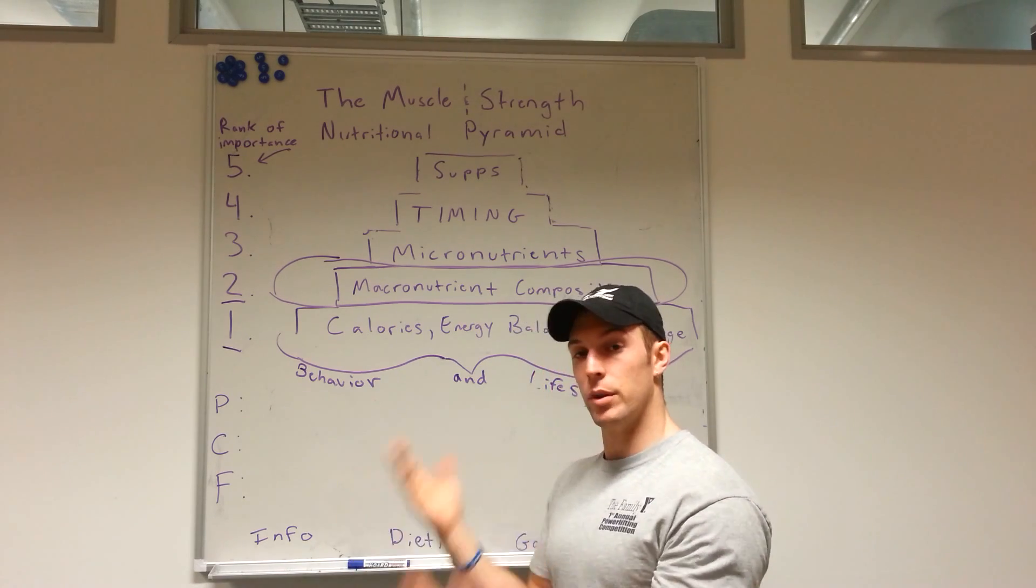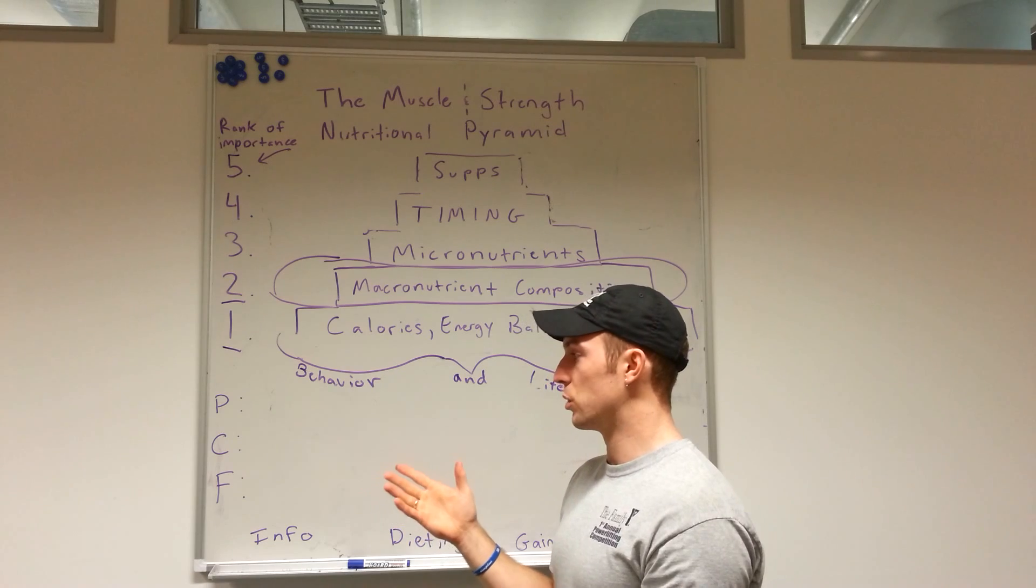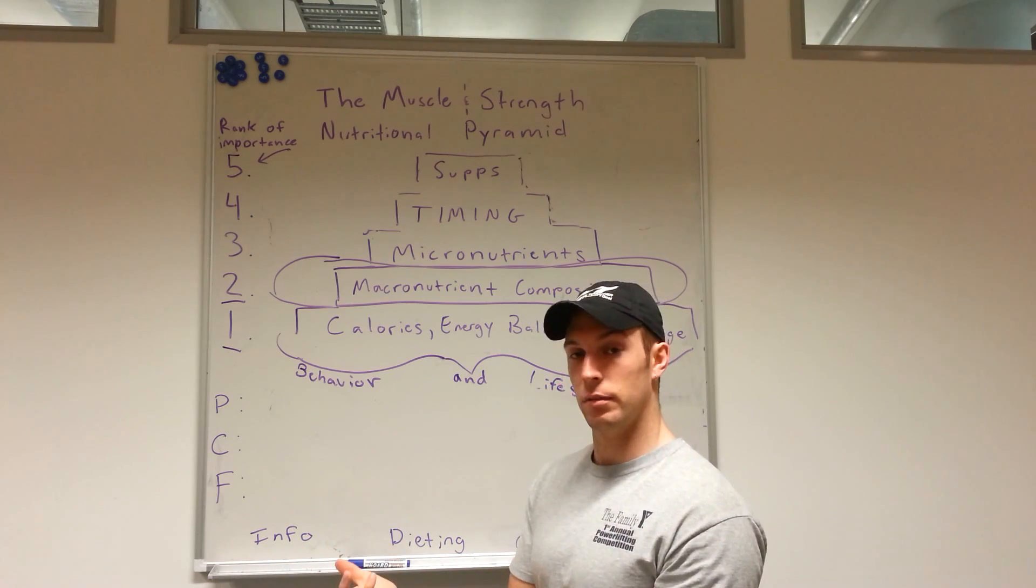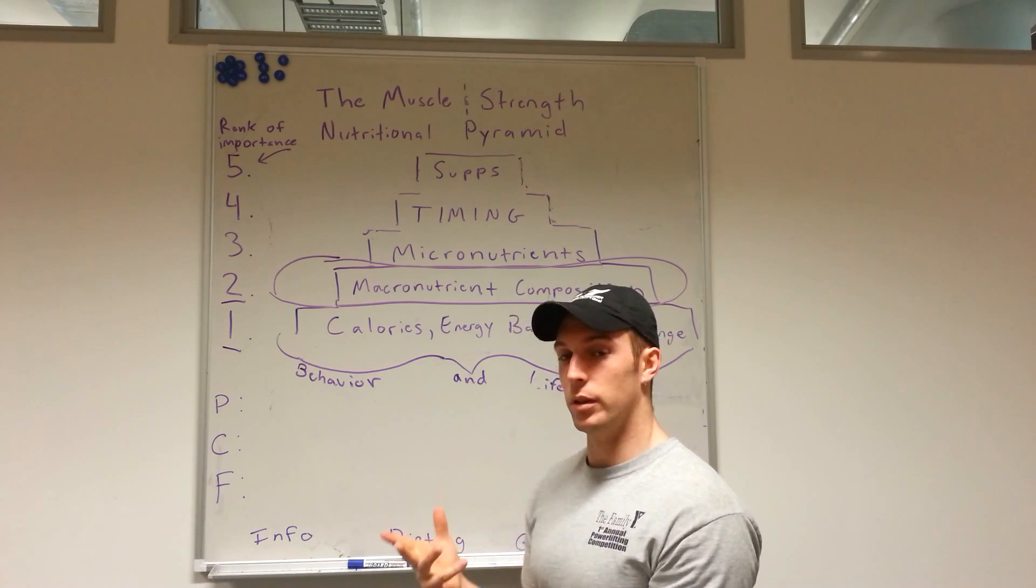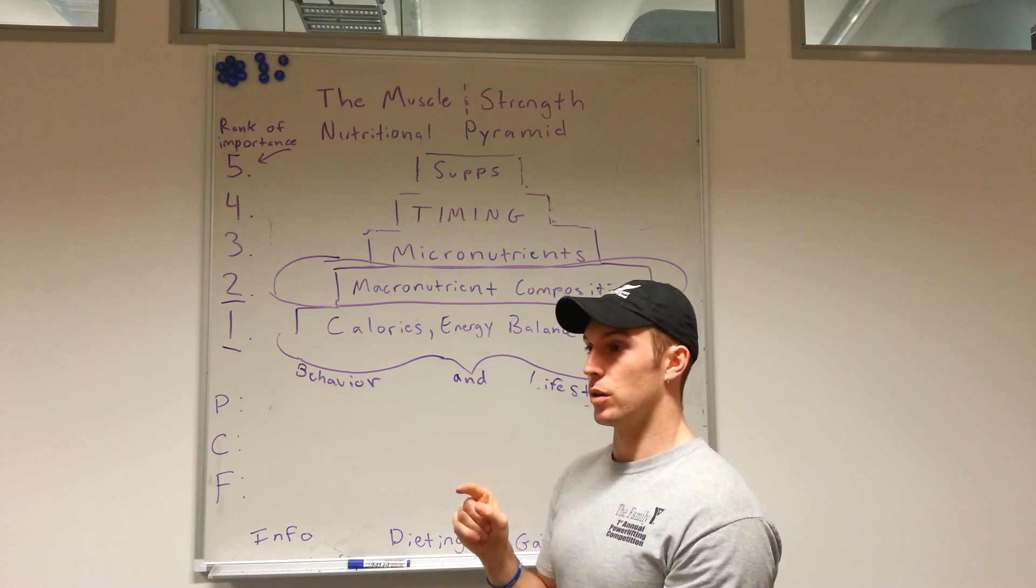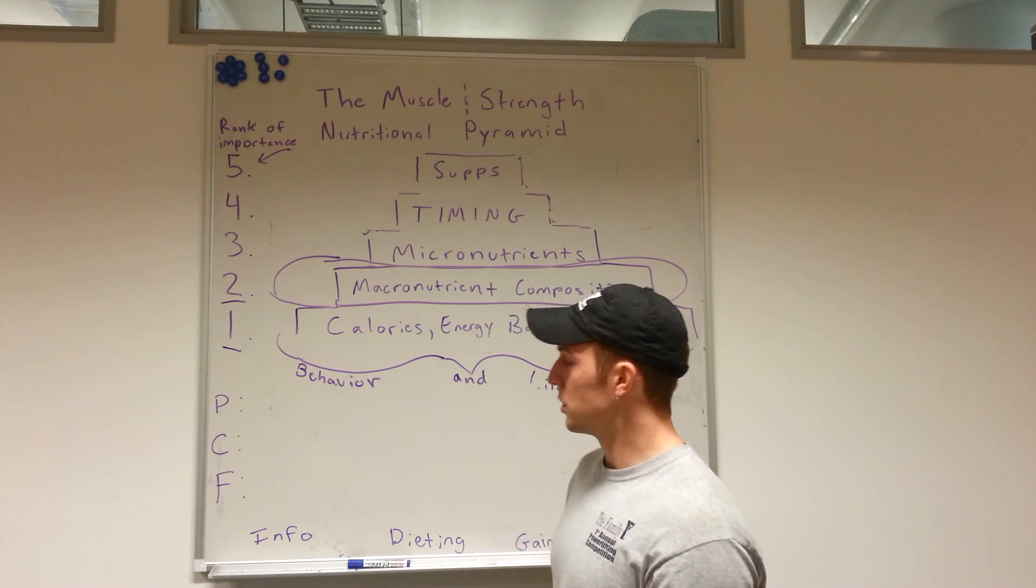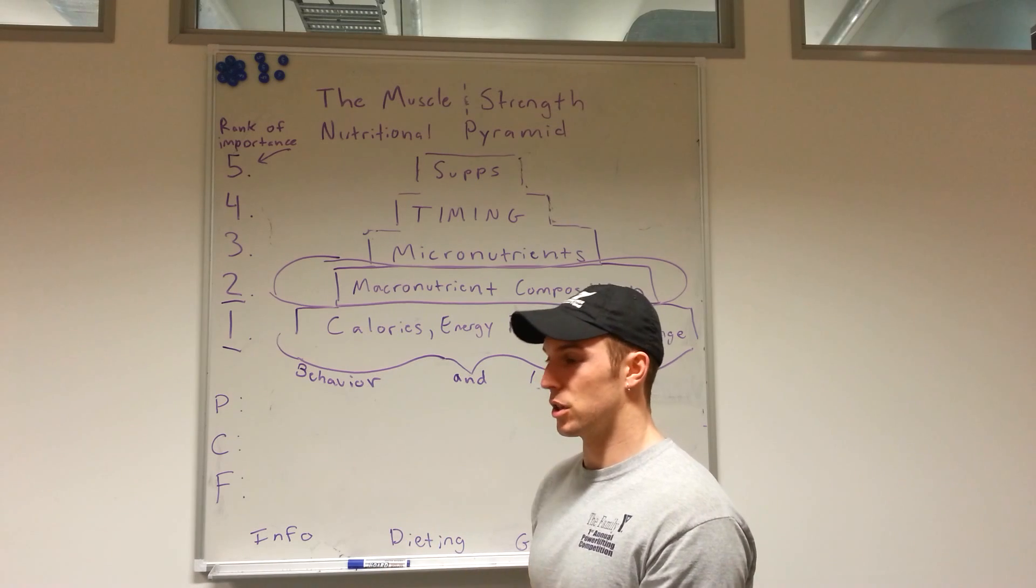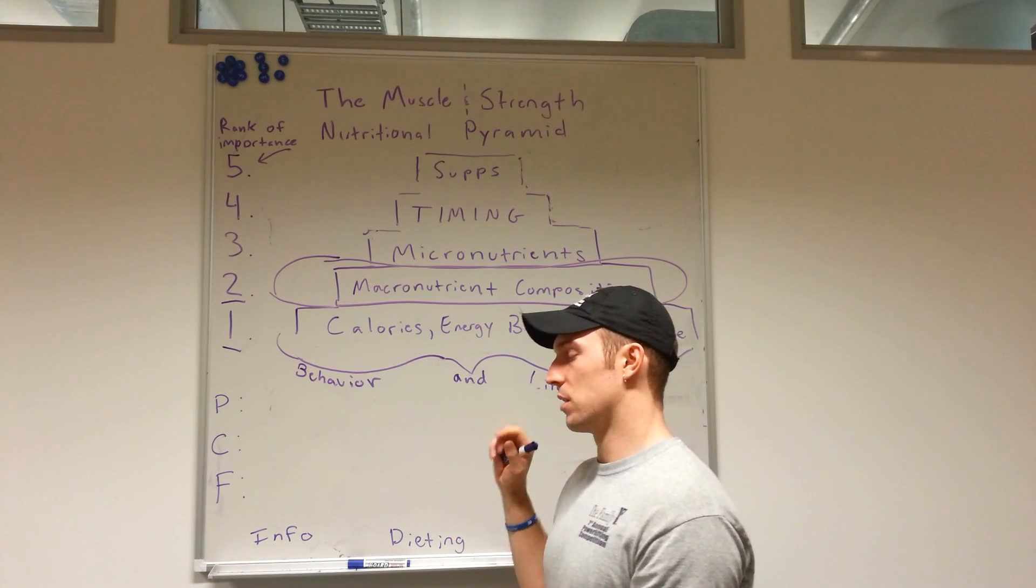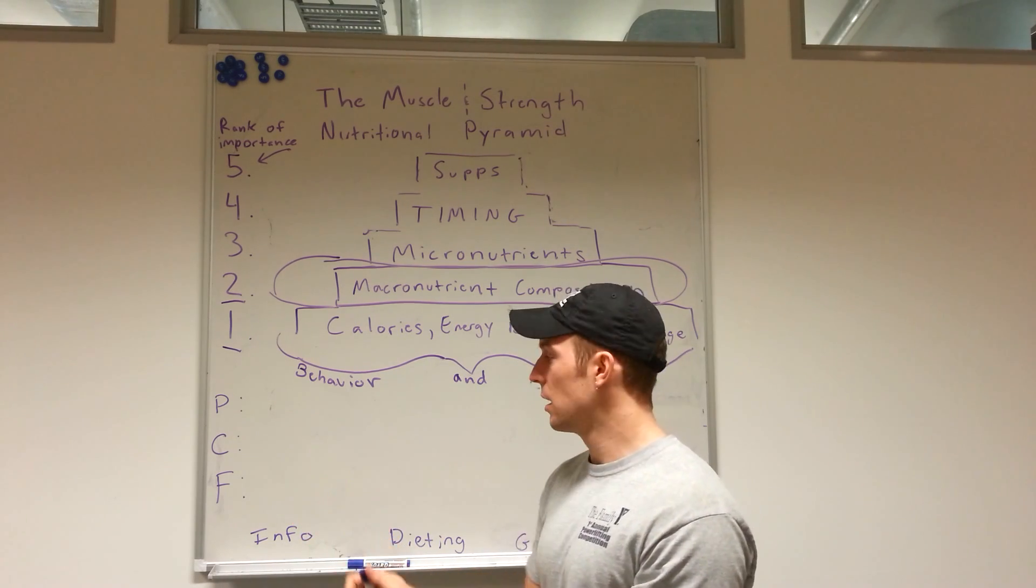Both have their pros and cons. Gram per pound is respective of your body mass, which makes sense. However, it doesn't give respect to your metabolism per se, or how much of a calorie budget you have.